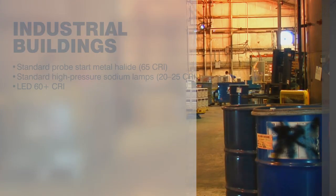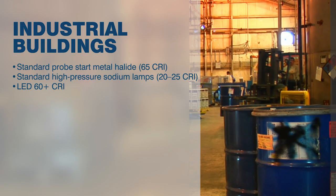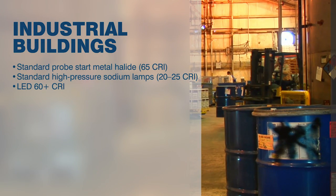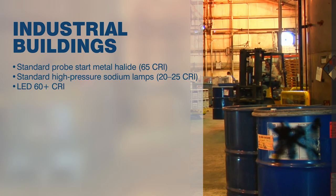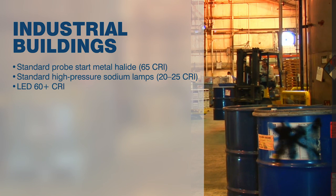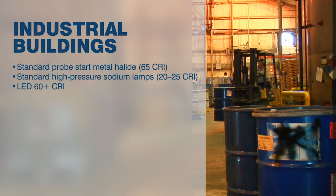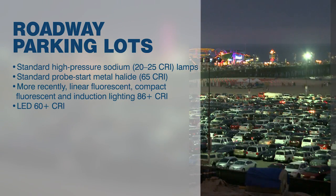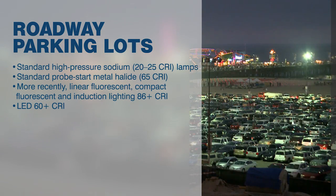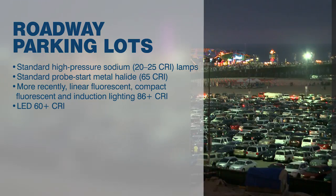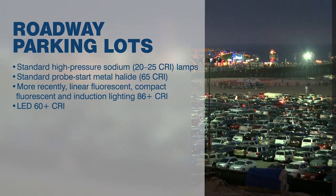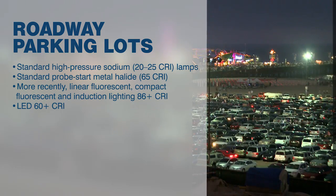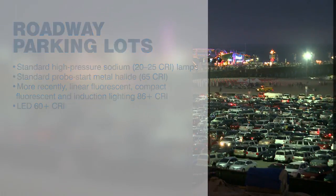Industrial buildings often don't require fluorescent lamps with more than 70 CRI and can even go as low as 20 to 25 CRI when using standard high pressure sodium lamps. Street lights and parking lots are two more examples where you don't require high CRI lamps — all you need is standard illumination to keep you on the road.